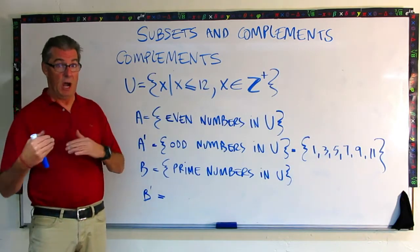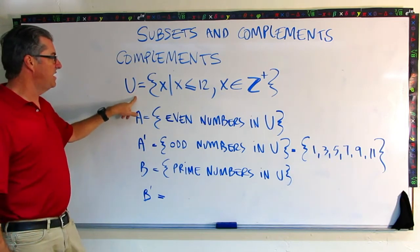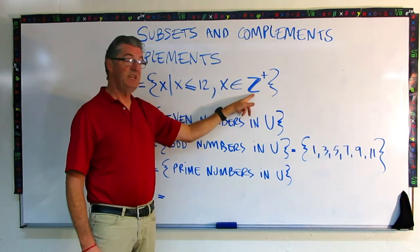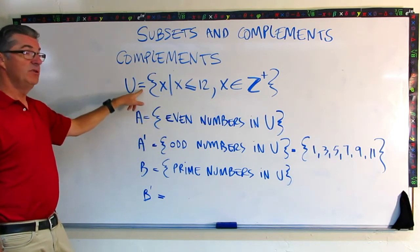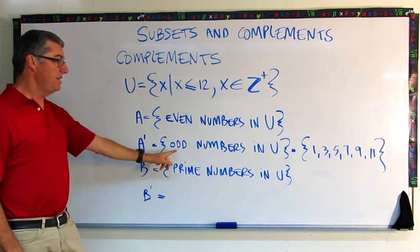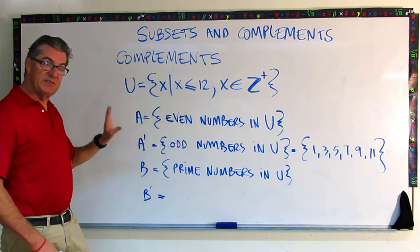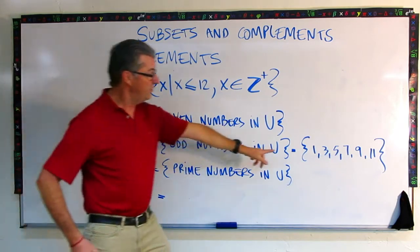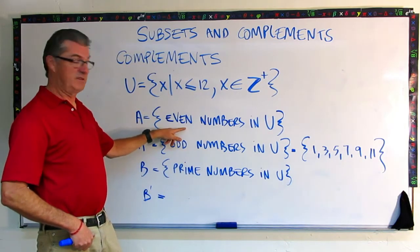Now let's get into it and find some complements of some sets. To do that, we need a universal set to look at. So this universal set is a set of all x such that x is less than or equal to 12 and x is a member of the positive integers. So if set A is the even numbers in this universal set, then A prime, which is the complement of A, would just have to be the odd numbers in U. These are all the numbers that are not in this set. So complements contain all the numbers that aren't in the regular set that they are a complement of. So I can enumerate those numbers: 1, 3, 5, 7, 9, and 11. These are all the positive integers less than 12 that aren't in the even numbers, which are the odds.